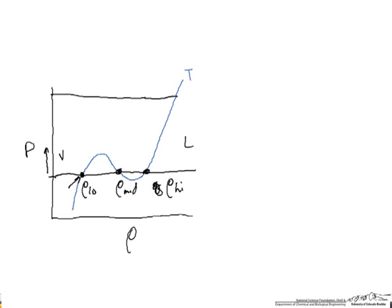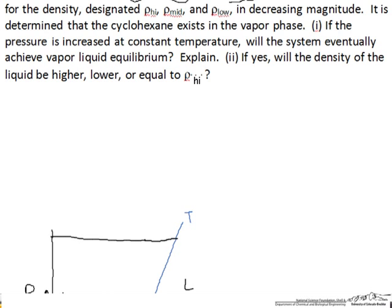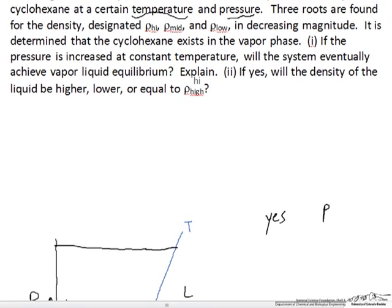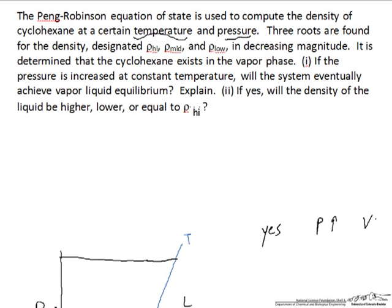And so by increasing the pressure, we can achieve that vapor-liquid equilibrium, and that will occur when the fugacity is equal between the vapor and the liquid phases. And so the answer to part one is yes, that if we increase the pressure, that we can achieve vapor-liquid equilibrium, for the reason that we know there has to be a phase transition.